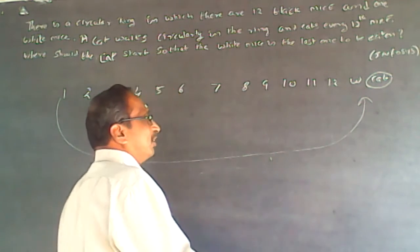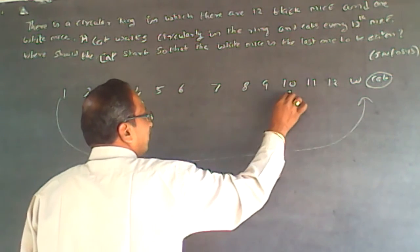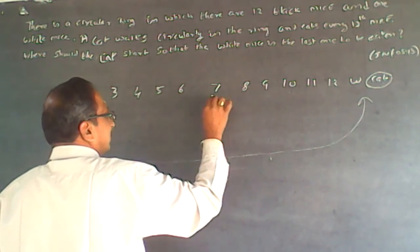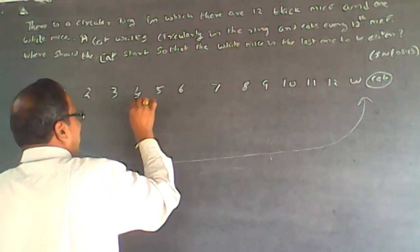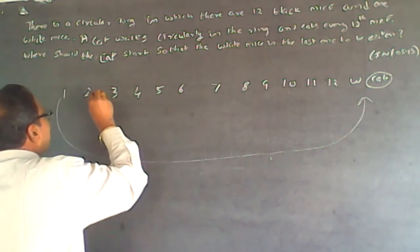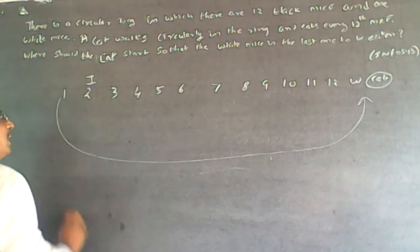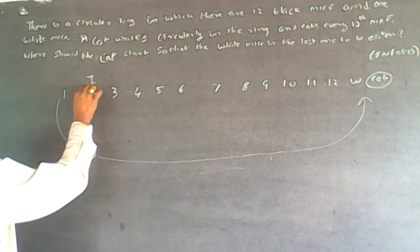Every 12th mouse is eaten. Counting: 1, 2, 3, 4, 5, 6, 7, 8, 9, 10, 11, 12 — this will be the first one to be eaten. I am marking it so next time I do not have to recount.